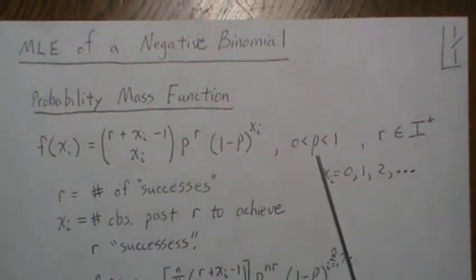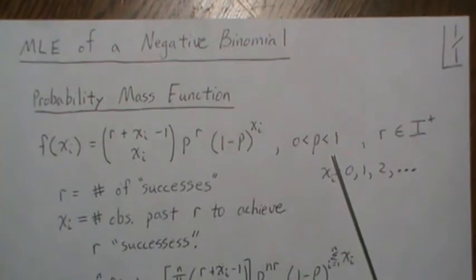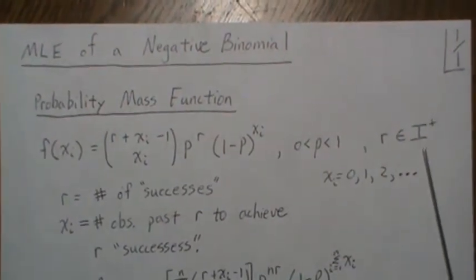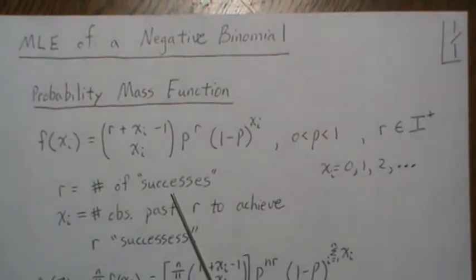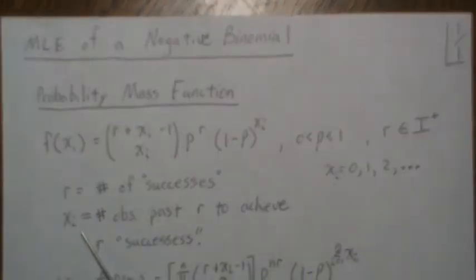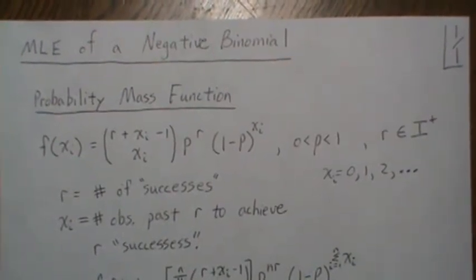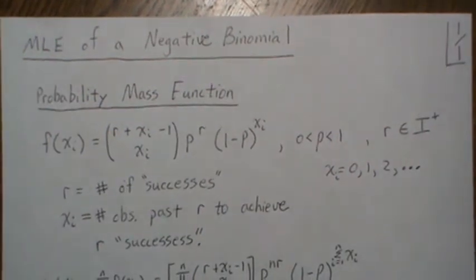Now P is the probability of observing an event or a success. R is a positive integer. R represents the number of successes or events that we want to see or observe. X is equal to the number of observations past R to achieve R successes.